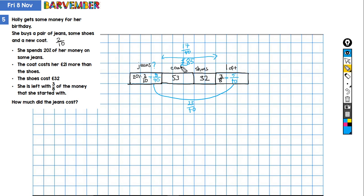So I now know I need to figure out what the value of one fortieth is. I know that this is seventeen fortieths. So I need to divide eighty-five by seventeen.